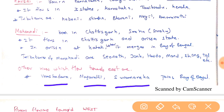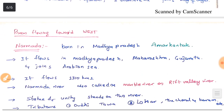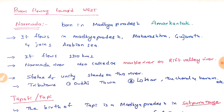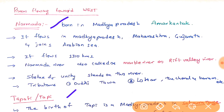Other east-flowing rivers joining the Bay of Bengal include Vamsadhara, Nagavali, and Suvarnarekha. Rivers flowing towards the west are mainly Narmada and Tapi, also called rift valley rivers as they flow through rift valleys. Godavari, Krishna, and Kaveri all flow east to the Bay of Bengal. Narmada's birthplace is Amarkantak; it flows through Madhya Pradesh, Maharashtra, and Gujarat to join the Arabian Sea.